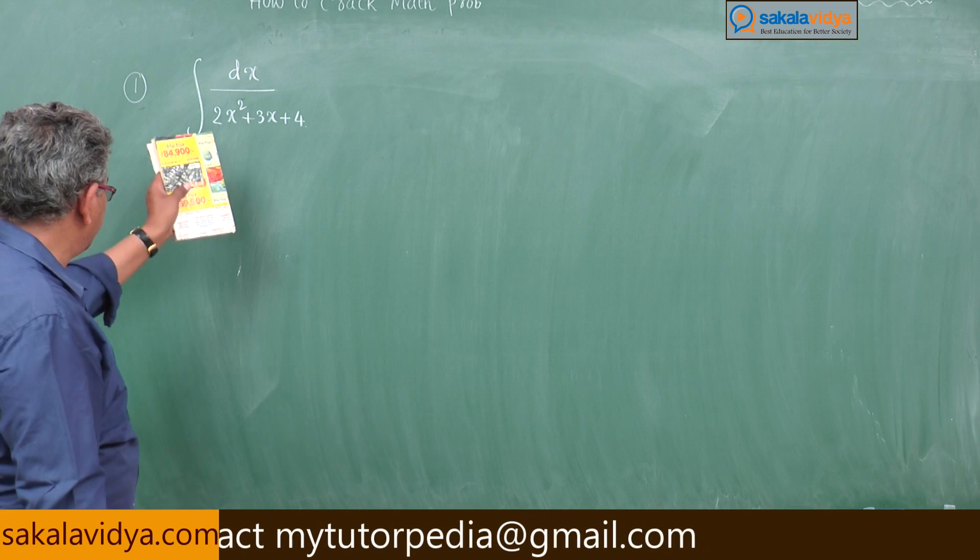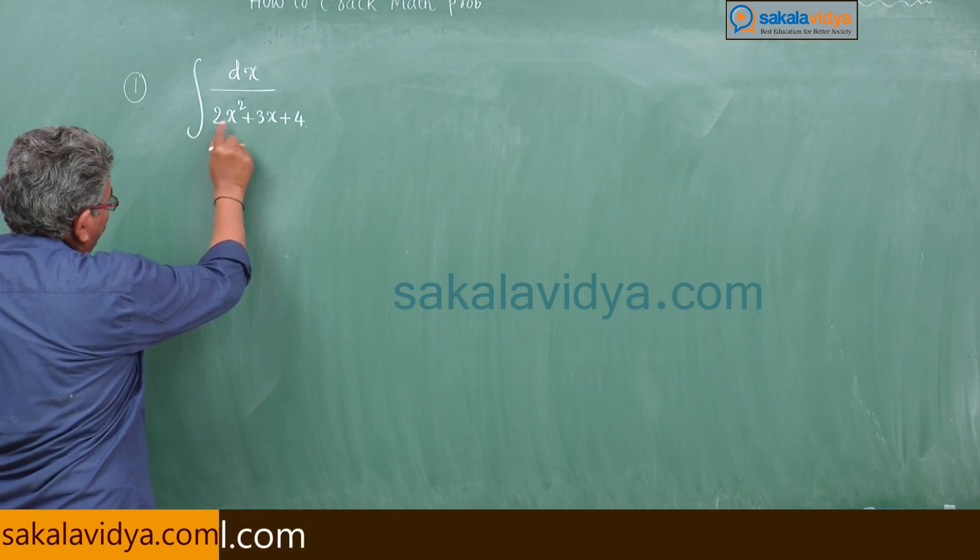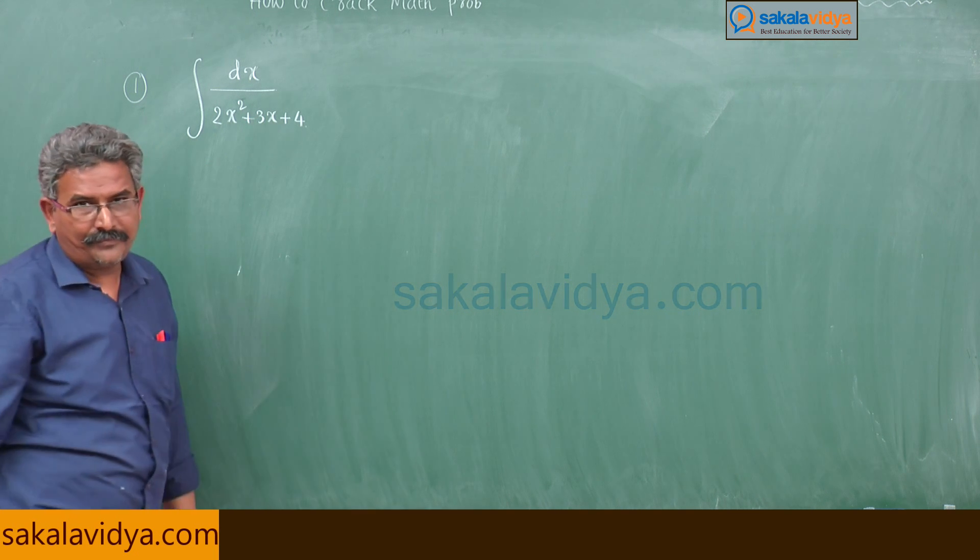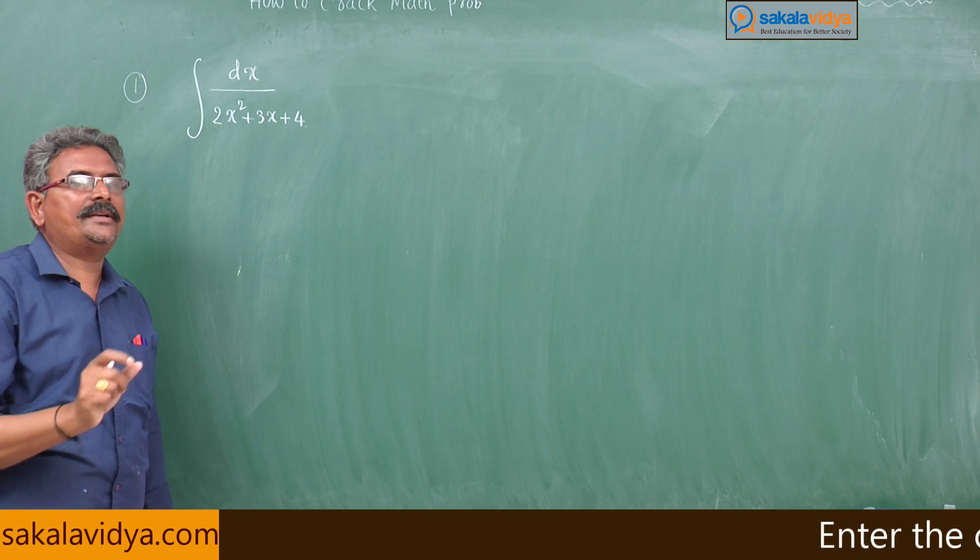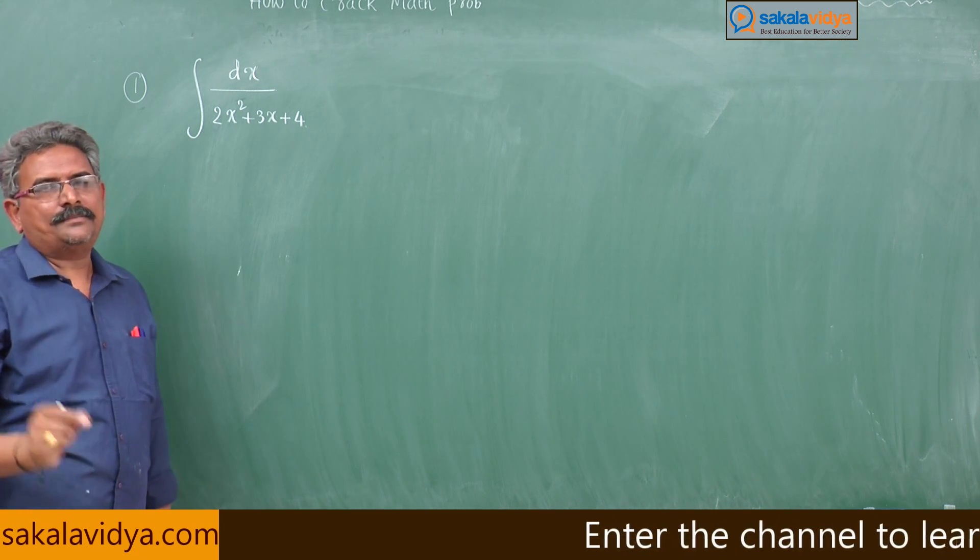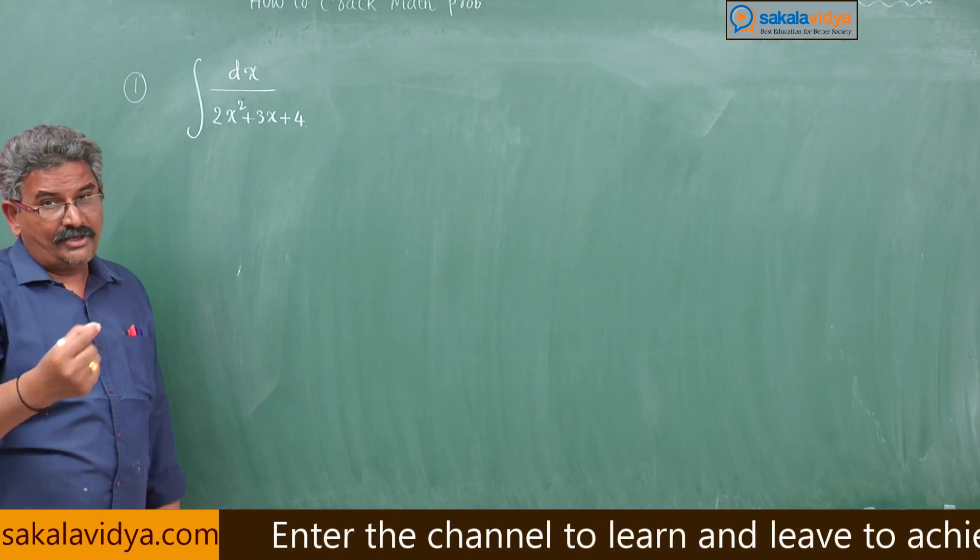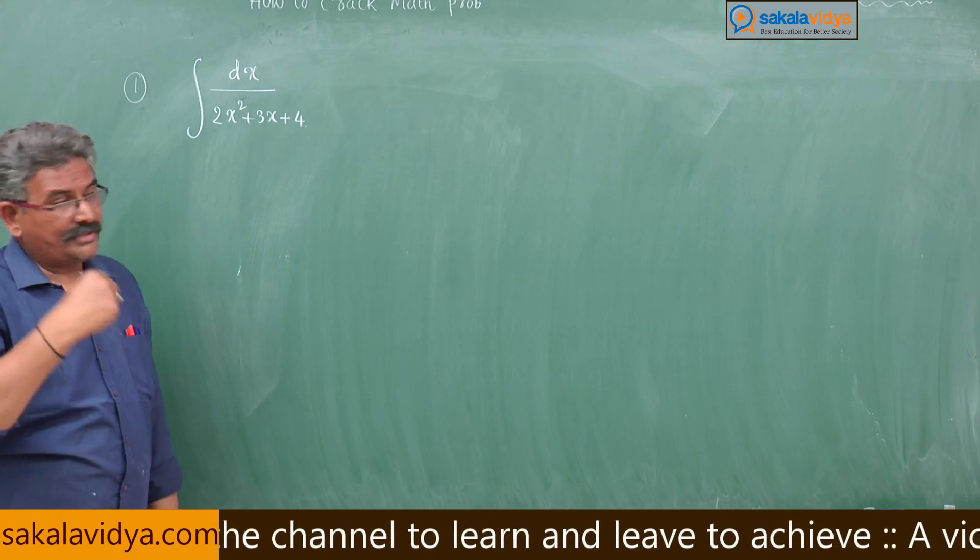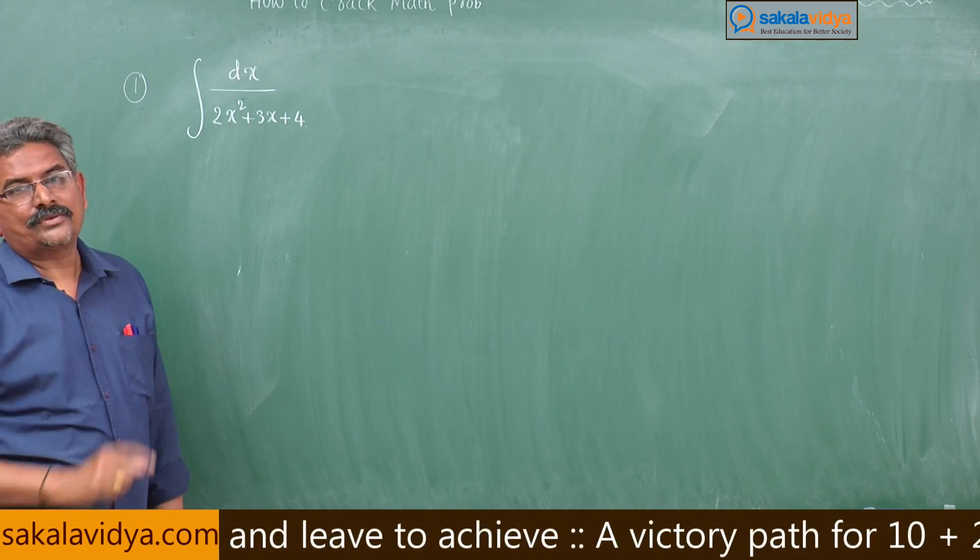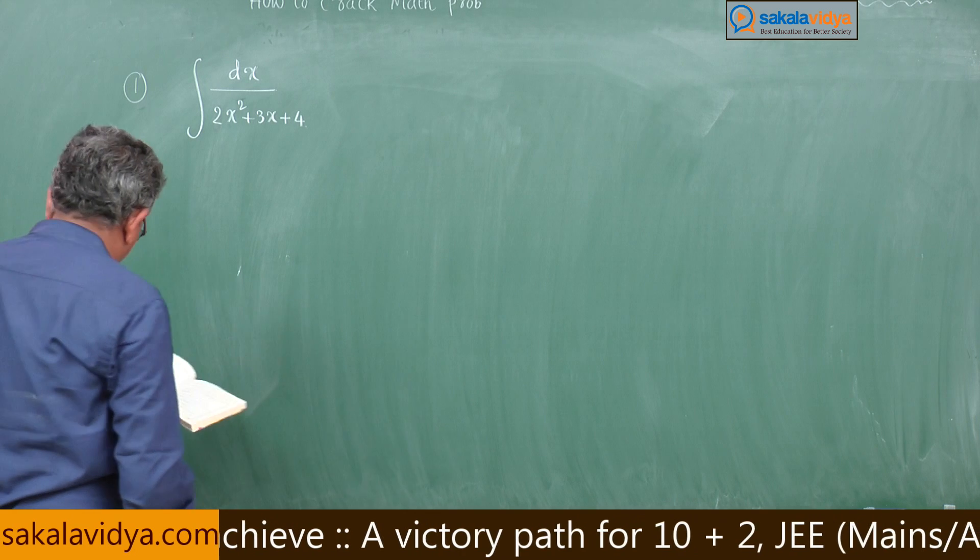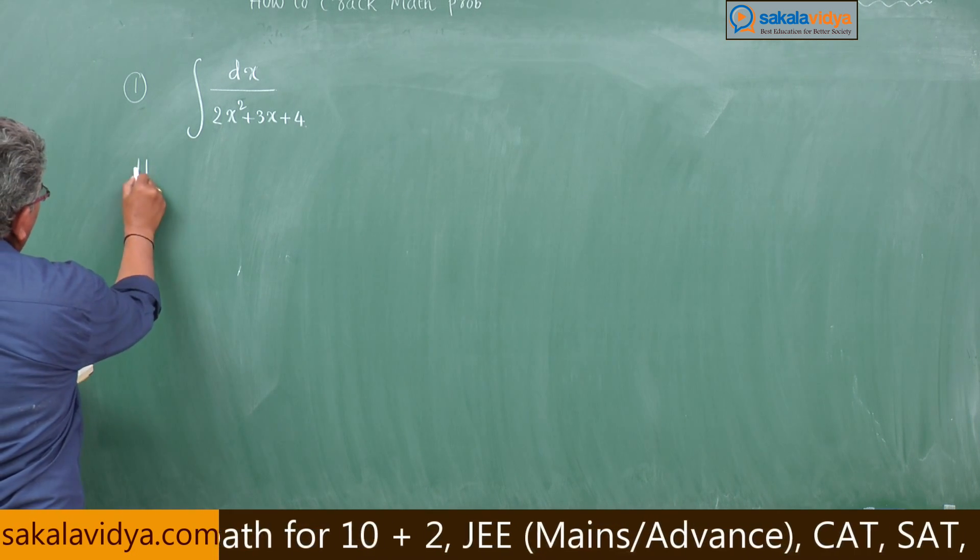Here this is in the form of 1/(ax² + bx + c). For ax² + bx + c form, first you find out delta value that is known as b² - 4ac. As the nature of the roots, we mean to say that delta value, we have to write the formula. For this one you remember this formula shortcut, or hint you can say better.